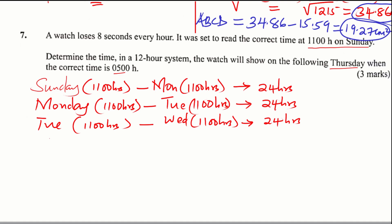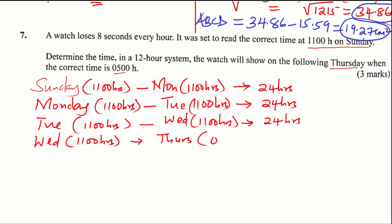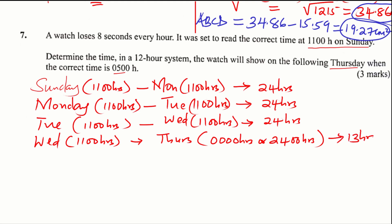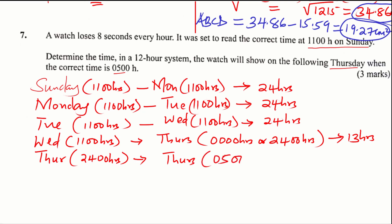Each of those is a full day. Now from Wednesday 11:00 hours to Thursday midnight — midnight is 00:00 hours or 24:00 hours — so that is 13 hours: take 24:00 hours and subtract 11:00 hours, giving 13 hours. Then from Thursday midnight to Thursday 05:00 hours, that is 5 hours.